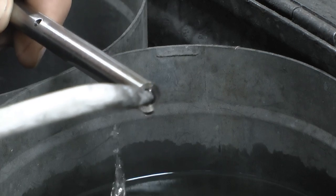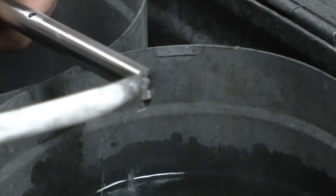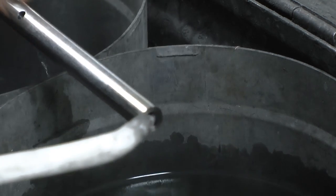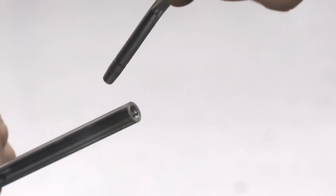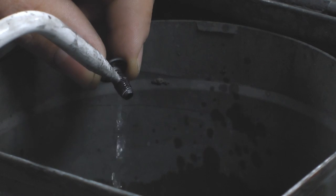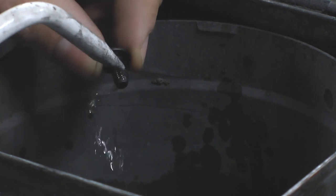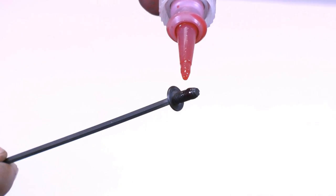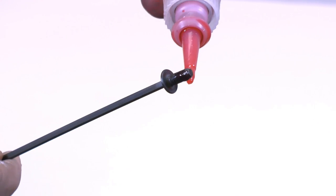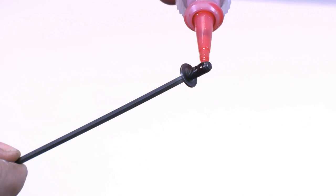Take a moment now to clean the guide rod's threads with lacquer thinner or another suitable solvent and then blow them dry with compressed air. Do the same with the guide rod screw you just removed. Then, apply a small amount of Loctite 263 or equivalent thread locker to the screw's threads when you're ready.